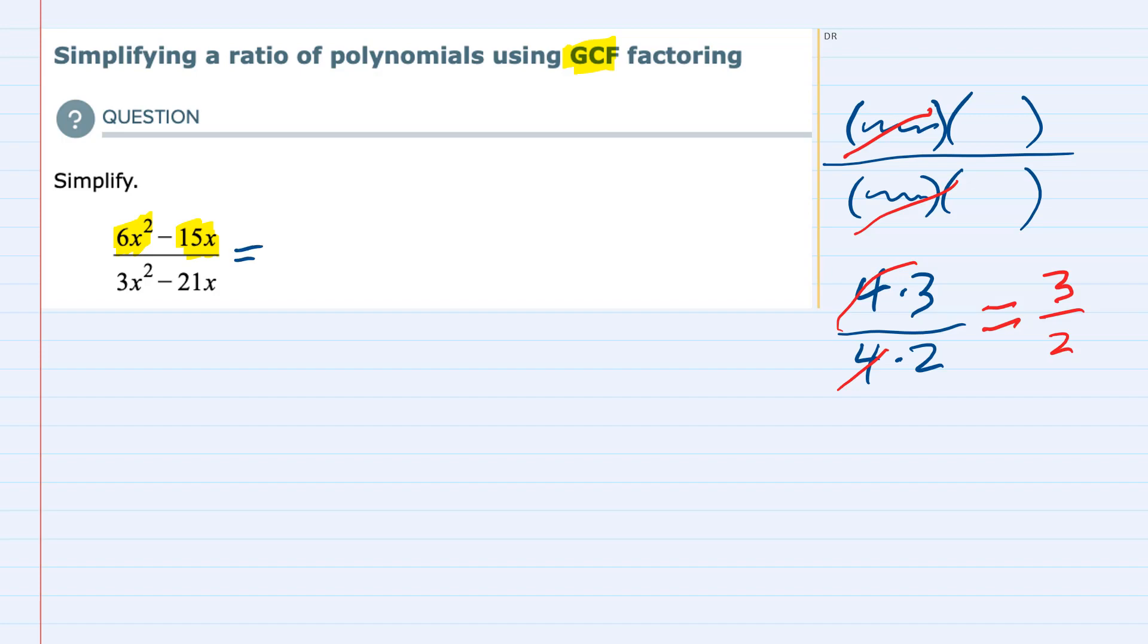So that means that I can factor out a 3, and then they also both have at least 1x. The first term 6x squared has 2 x's and the second one has 1x, so they both have at least 1x. What would that look like if I were to factor out a 3x?